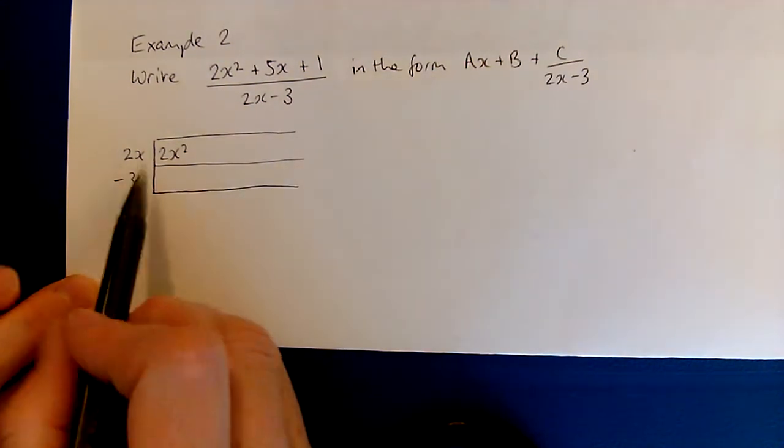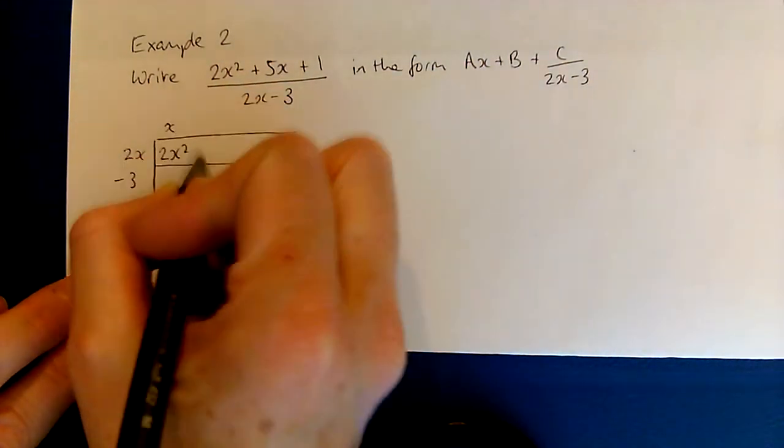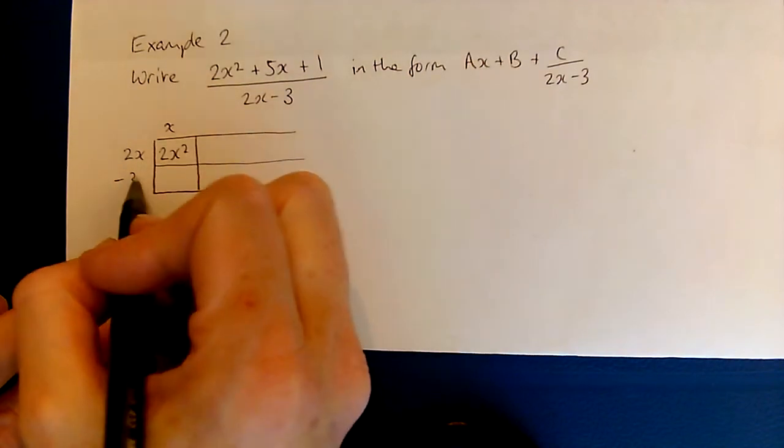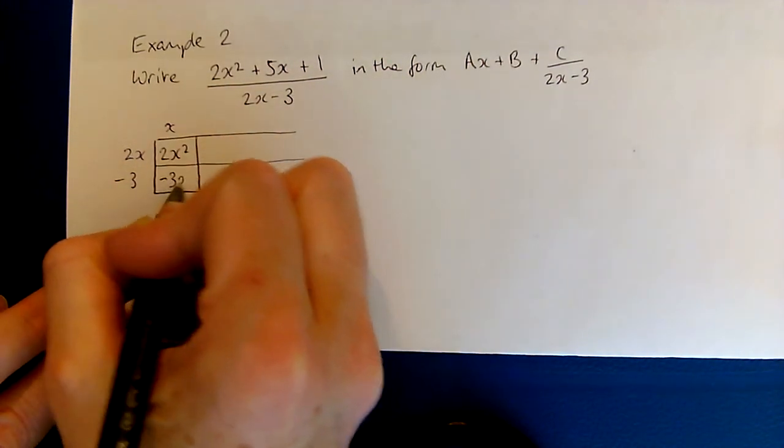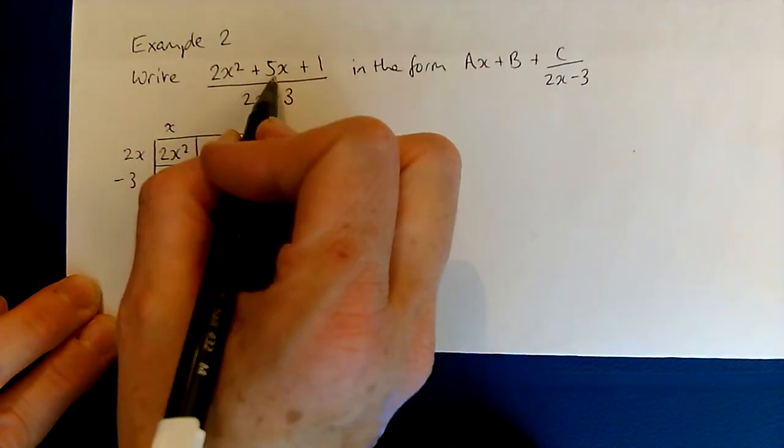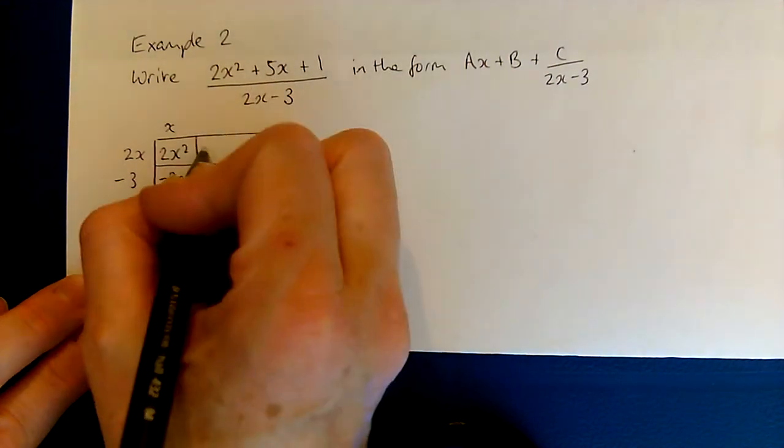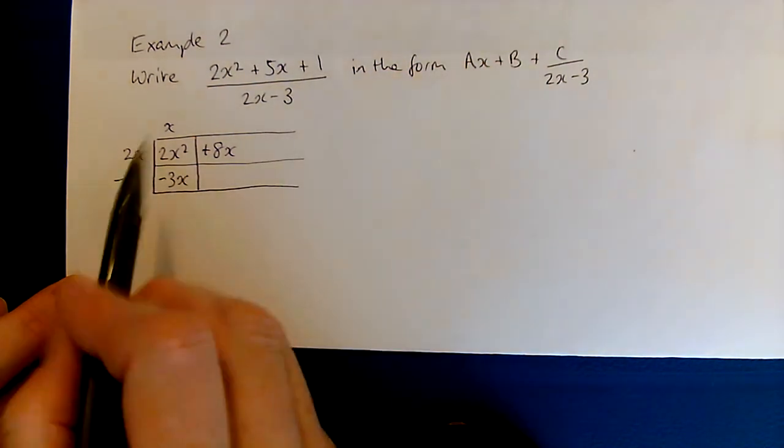What do I multiply 2x by to make 2x squared? Just x. But what do I get if I multiply x and negative 3? I get negative 3x. I don't want to have negative 3x, I want to have plus 5x, so I need to add an extra 8x.